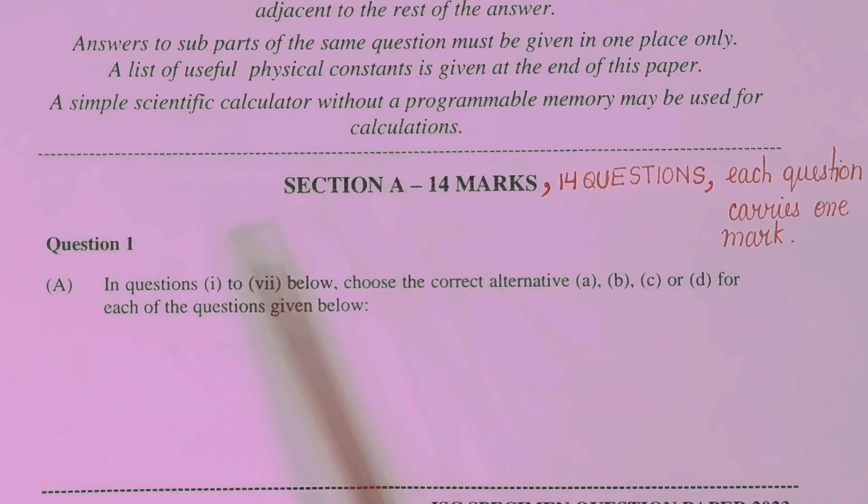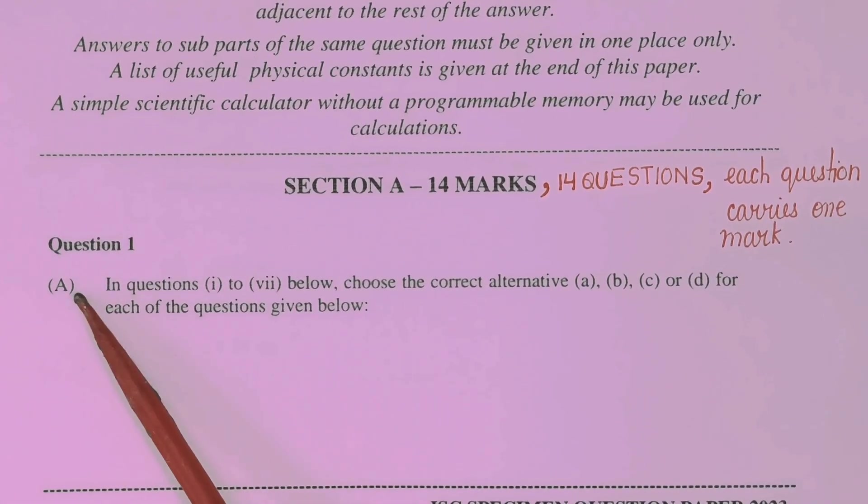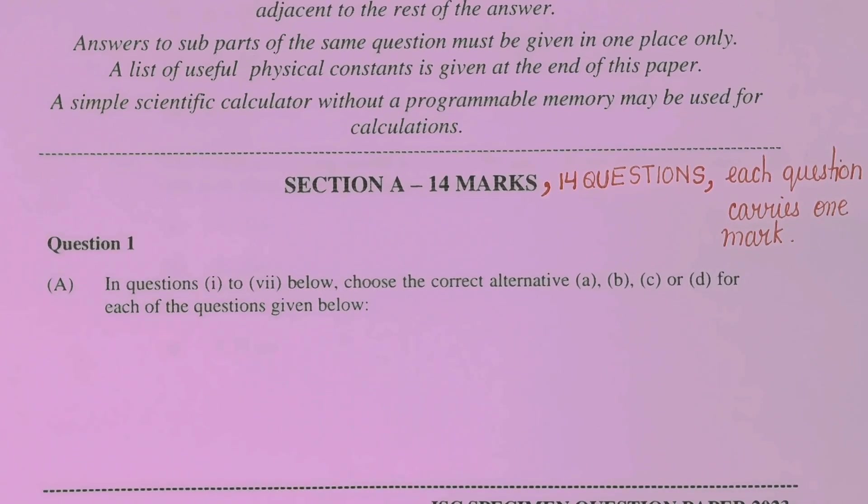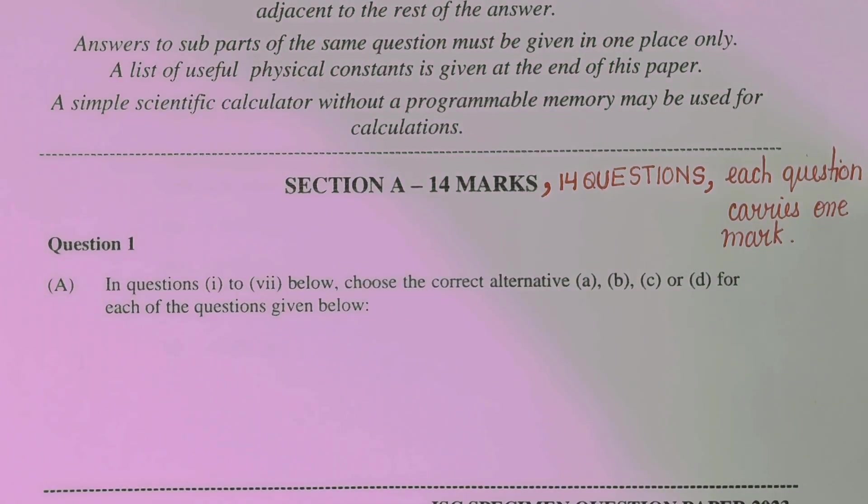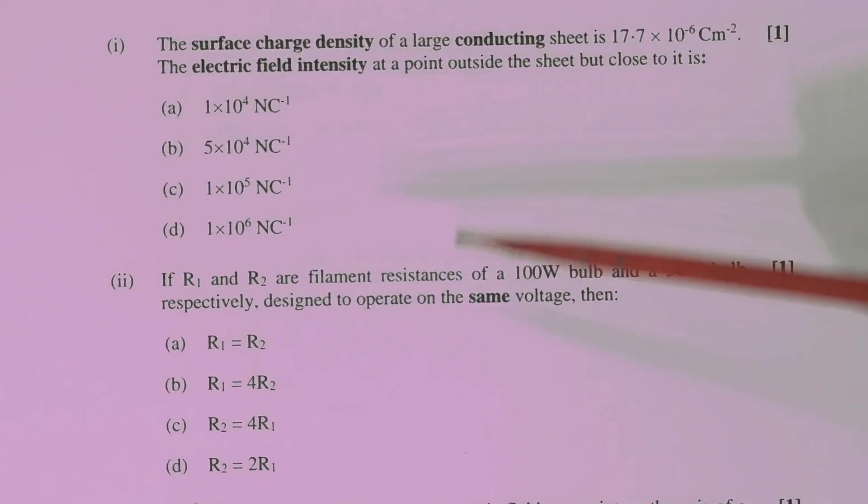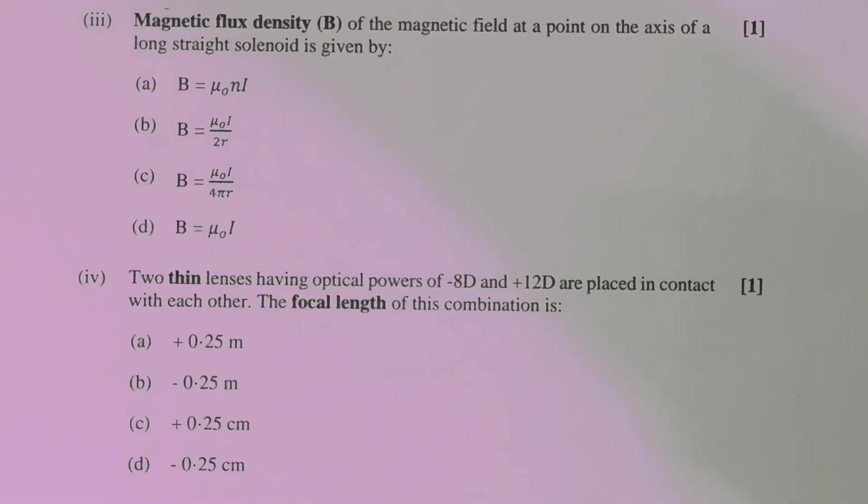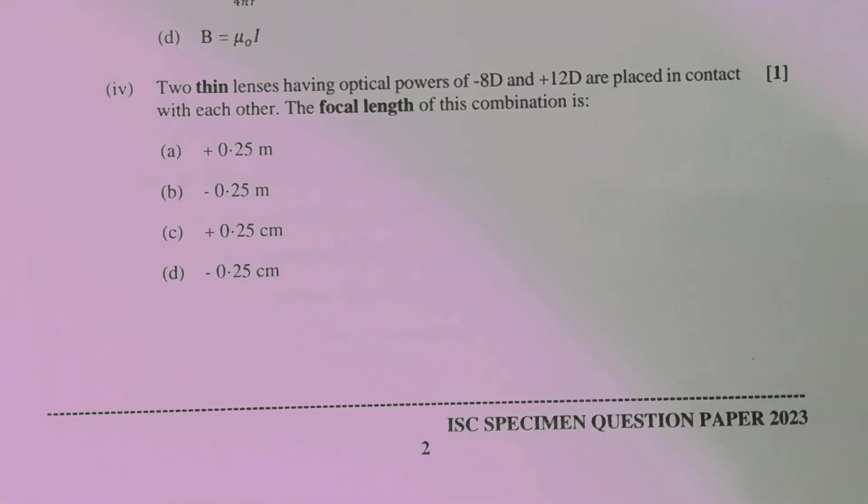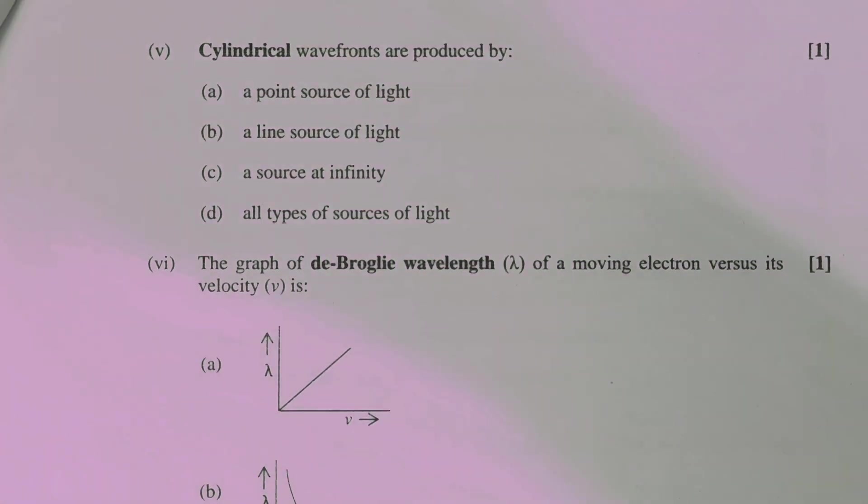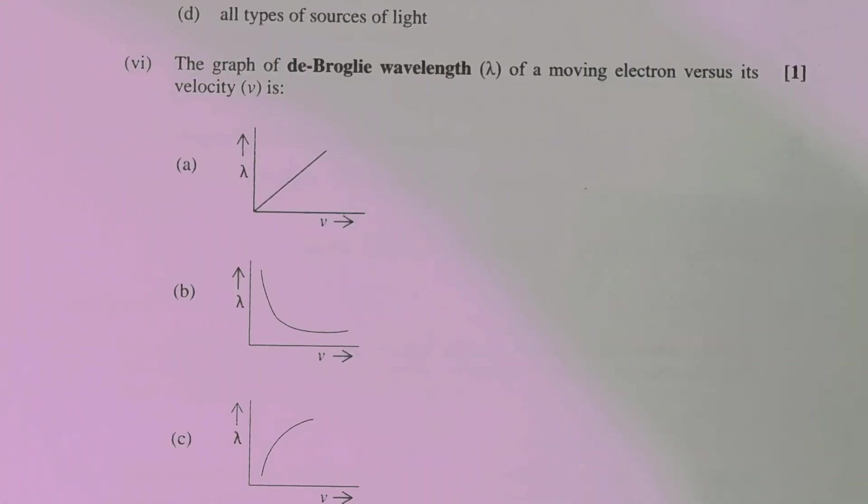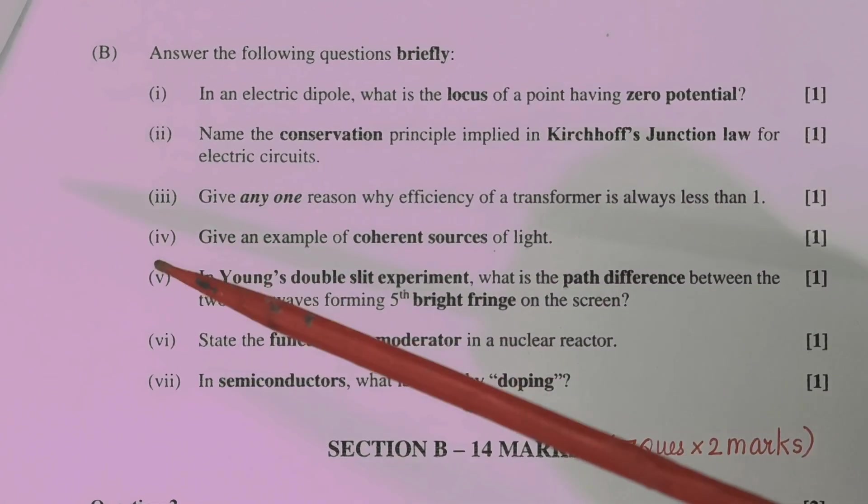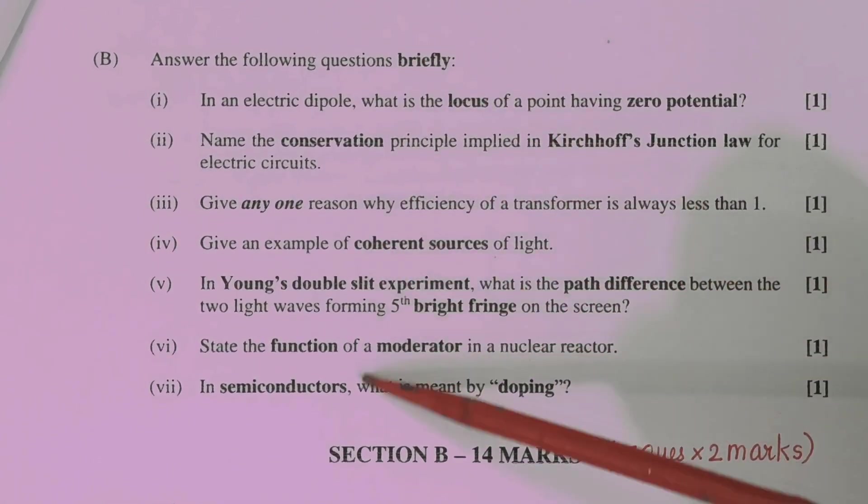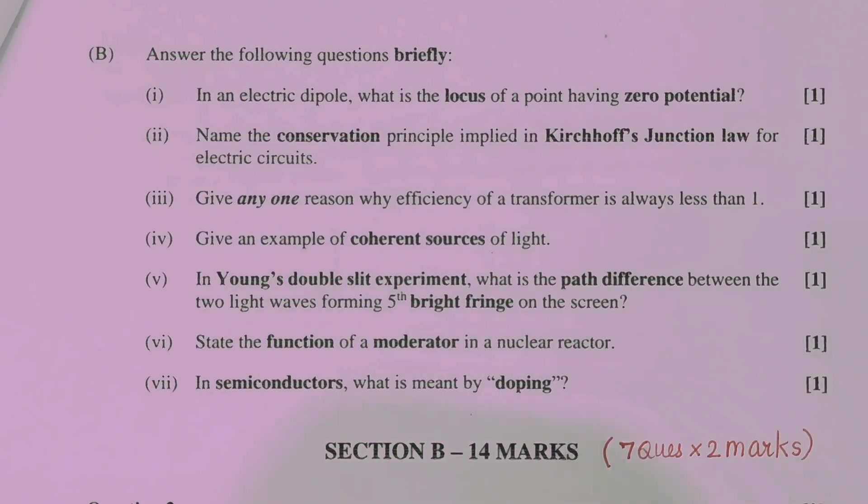Now you can see this section is objective type. Just observe the questions. I will make this PDF available on my Instagram channel and the link will be given in description box. Total 14 questions and all are objective questions. You just have to tick the correct option. 7 questions were objective type and 7 questions are in which either one line or one word is required as the answer.